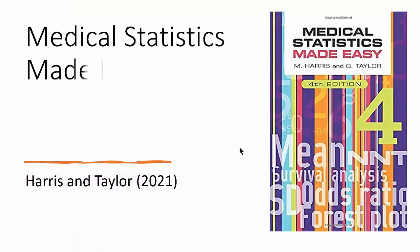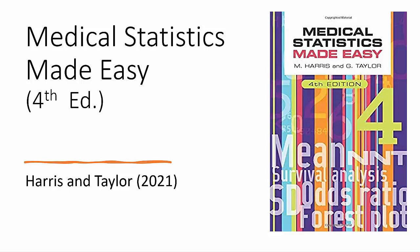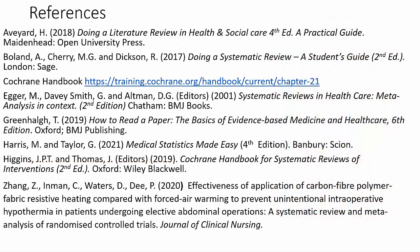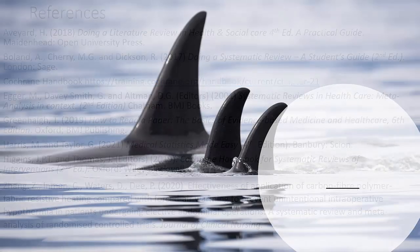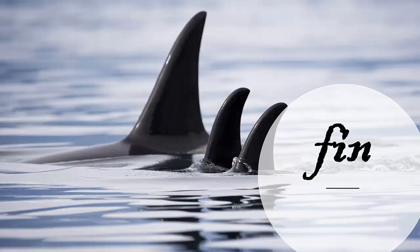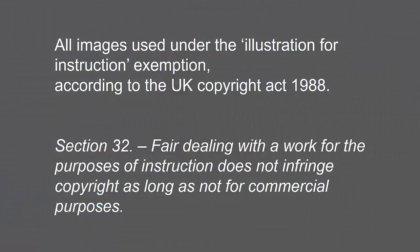Finally on my list of recommended texts is Medical Statistics Made Easy by Harris and Taylor — a very accessible and useful small reference book helping to demystify many of the concepts you will come across in statistics and their use in quantitative research papers. Here are the books in Harvard reference form, as well as references to other books and papers mentioned in the presentation. I hope you found this first video useful as an overview of what systematic reviews are all about. See you in the next one — cheerio!